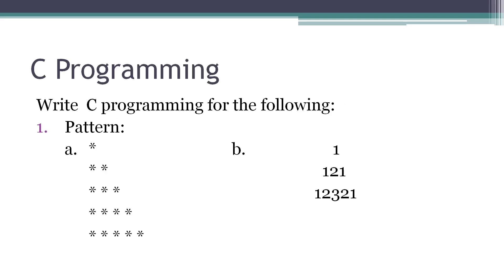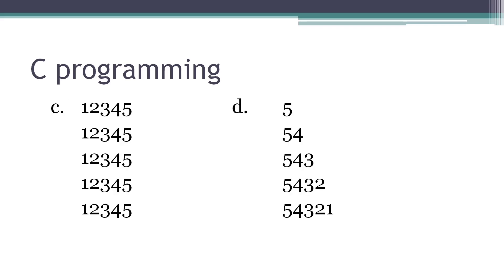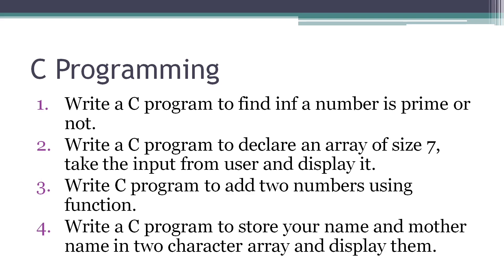For C programming, you will see patterns of different types of triangles and pyramids, and number patterns like 1, 1 2, 1 2 3, 1 2 3 4. After that, some programs from the first chapter, like writing a program to check whether a number is prime or not. There are also programs from arrays — for example, write a C program to declare an array of size 7, take input, and display it; or declare two arrays and copy elements of the first array to the second and display it. Also write a C program to add two numbers using a function, and a C program to store a name in a character array and display it.